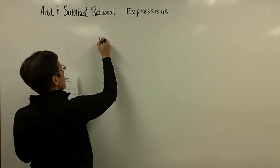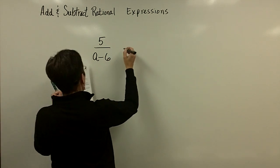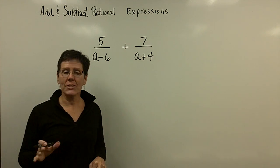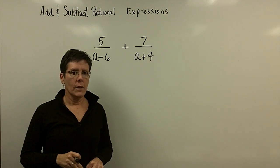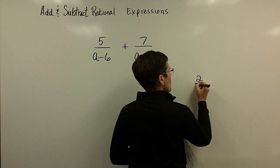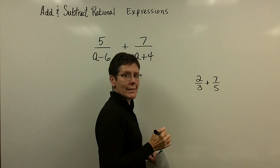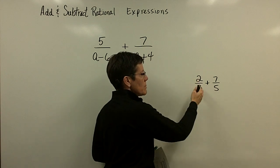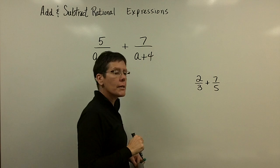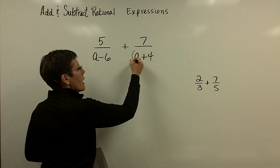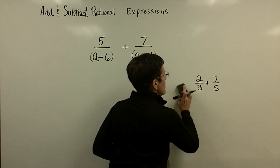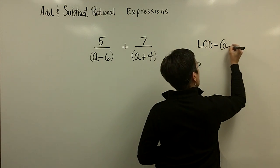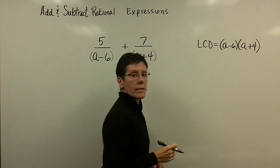Let's do a problem with binomial denominators. The first step in finding a least common denominator is to factor the denominators if possible — and these aren't factorable. Just like adding 2/3 and 7/5 gives an LCD of 15 because they don't share a prime number, these denominators are just (a + 4) and (a − 6). So the LCD contains both of those binomials: (a − 6)(a + 4).